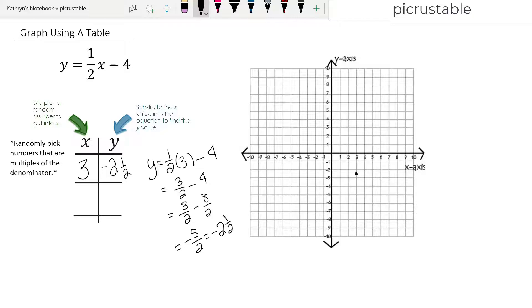What if we have a smaller graph? Guessing is just not a really good idea when we're graphing. So that's why we only want to pick multiples of the denominator.